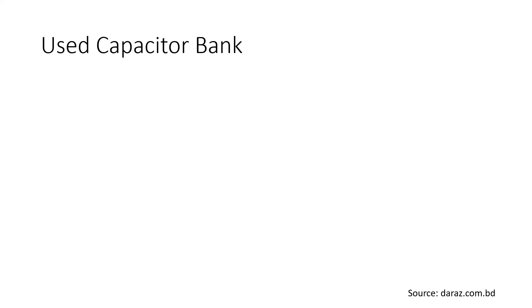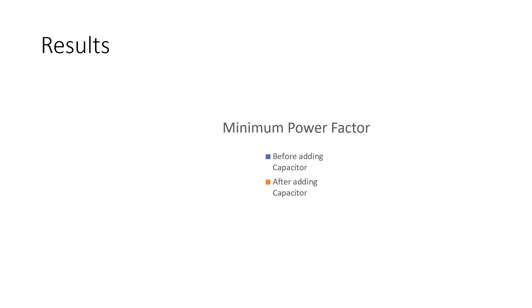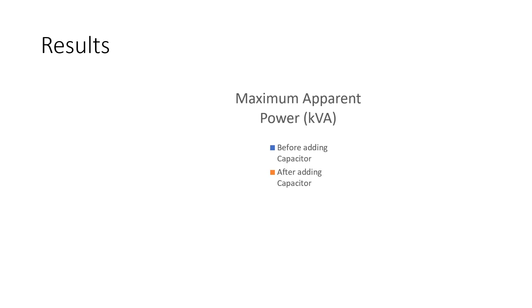The capacitor bank used for power factor correction has a power rating of 20 kVAR and costs approximately 3,700 taka, sourced from daraz.com. Other capacitor ratings are also displayed. Before adding the capacitor bank, the minimum power factor was 0.9018, and after adding the capacitor it improved to 0.9885 — a significant increase. The maximum apparent power before adding the capacitor bank was 77.99 kVA.